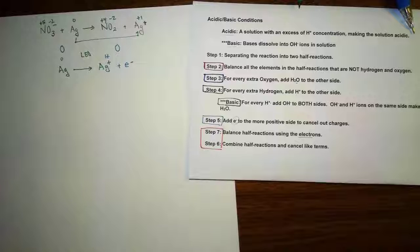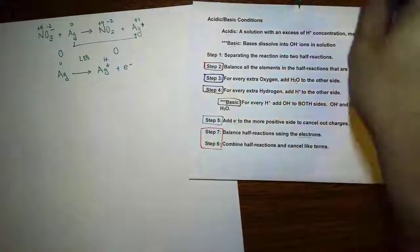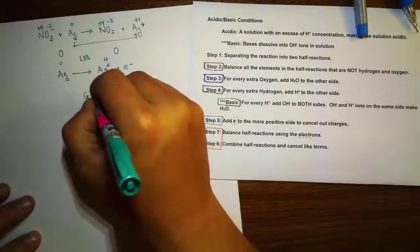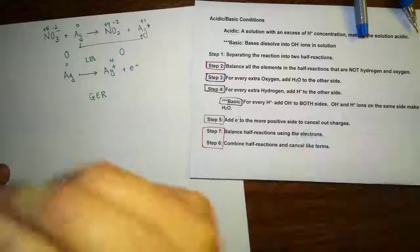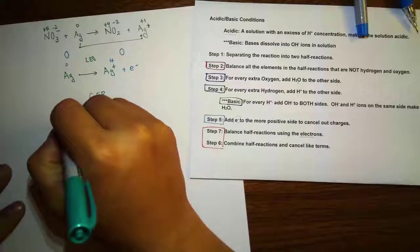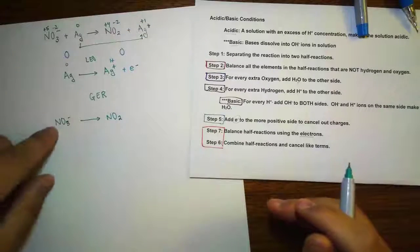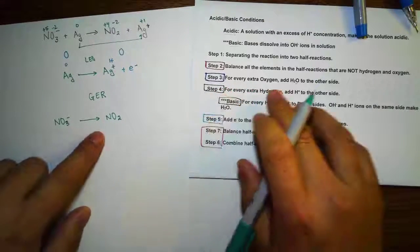Now let's go back and do the other part — the GER part, which is reduction. For the GER reduction, we have nitrogen going from +5 to +4, becoming more negative. So we have NO₃⁻ going to NO₂. Going back to the steps: the N is already balanced, so we balance any other elements besides hydrogen and oxygen. Now we go to steps 3 and 4 — let's look at the oxygen.